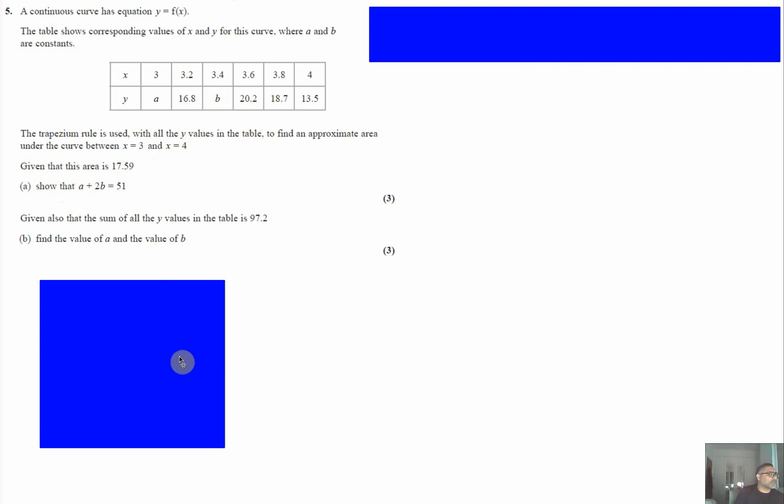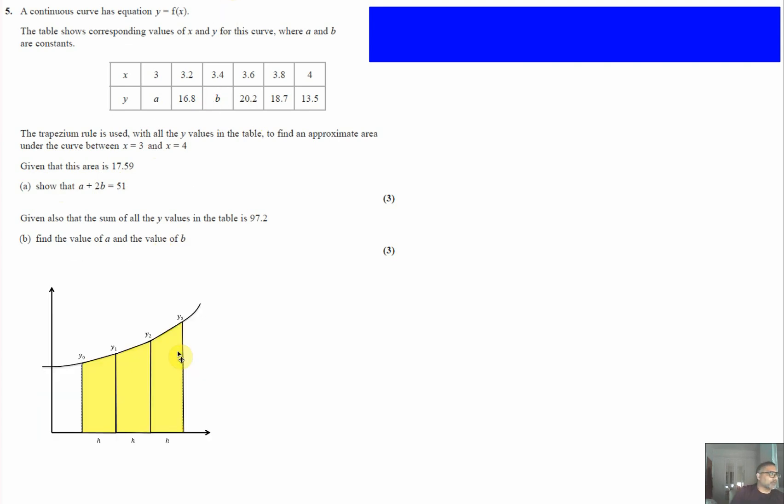Let's recap the trapezium rule. For a random function f of x, we split it into various trapeziums to estimate the area under the graph, essentially finding the integral between two points.